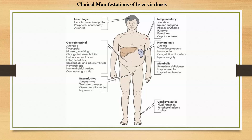All pathophysiological changes can lead to systemic clinical manifestations. Neurological manifestations include hepatic encephalopathy, peripheral neuropathy, and asterixis. Gastrointestinal symptoms include anorexia, dyspepsia, nausea, vomiting, change in bowel habits, dull abdominal pain, fetor hepaticus, esophageal and gastric varices, hematemesis, hemorrhoidal varices, and congestive gastritis.